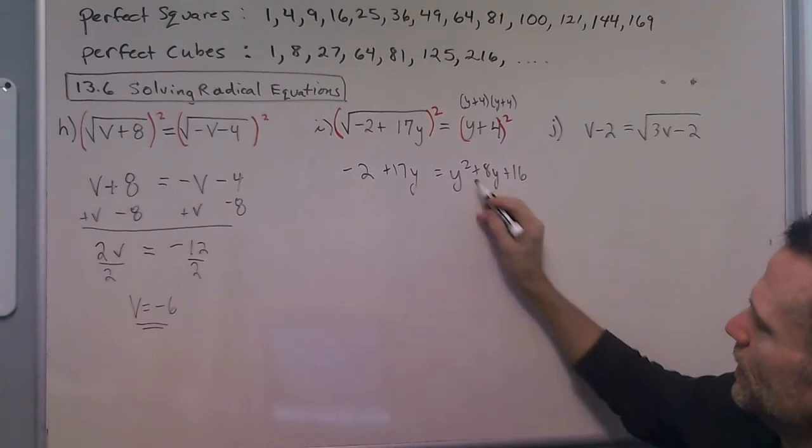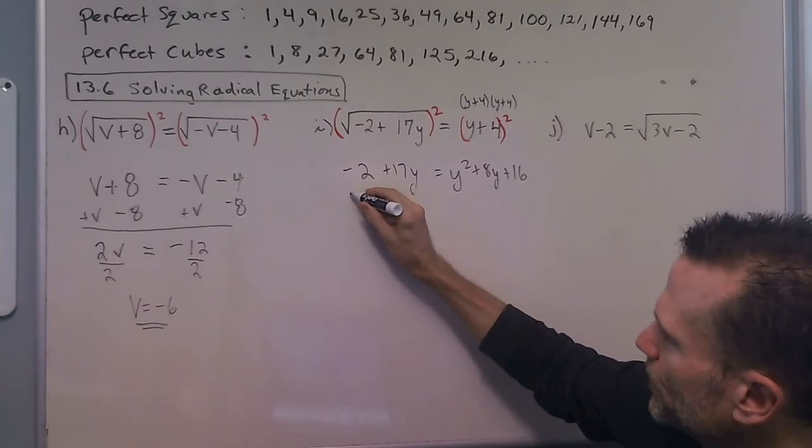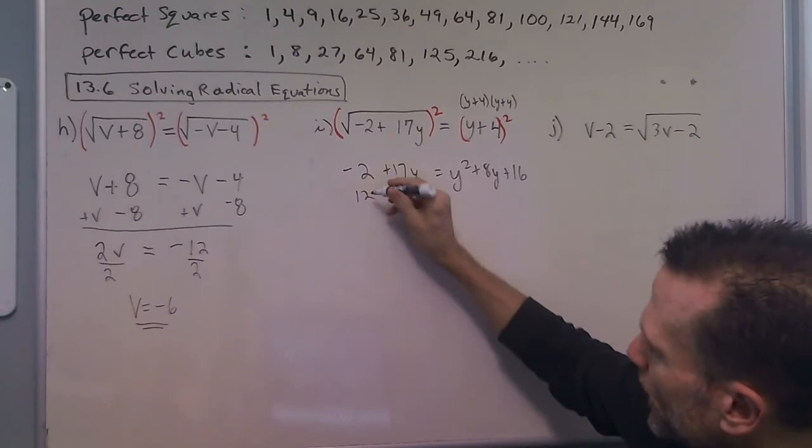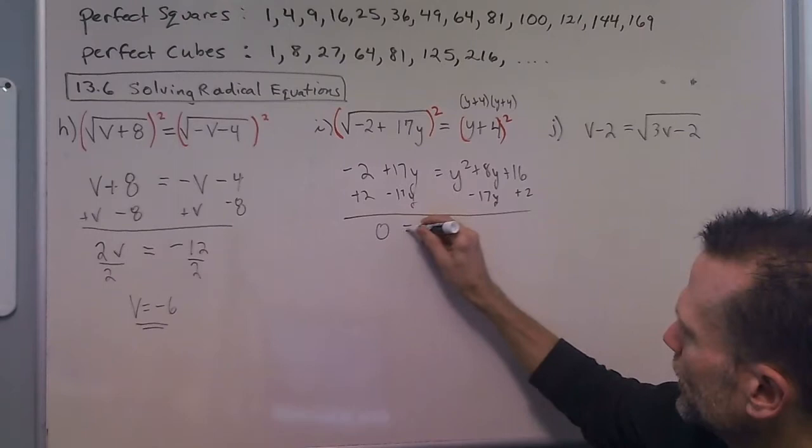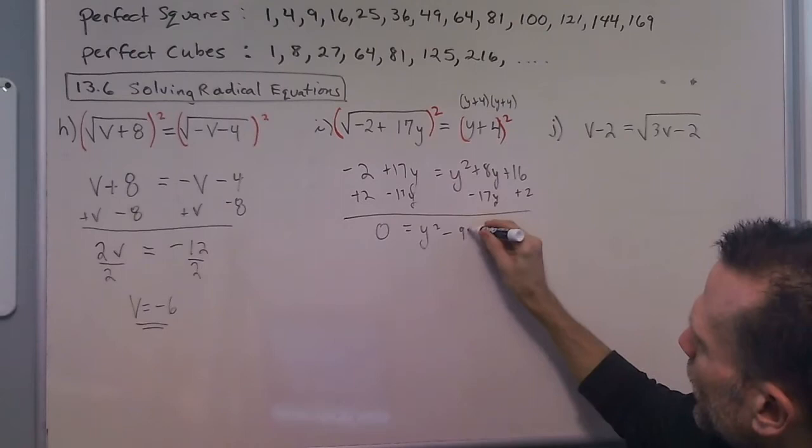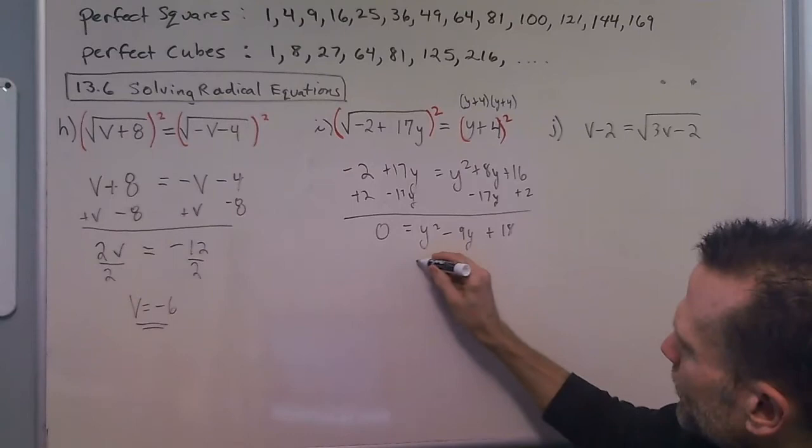Spotting that squared, we have to use a different solving technique, and the one we've been using so far is to get all the terms onto one side. So we'll add 2 and subtract 17y, draw a cleanup line, and we have 0 equals y squared minus 9y plus 18.